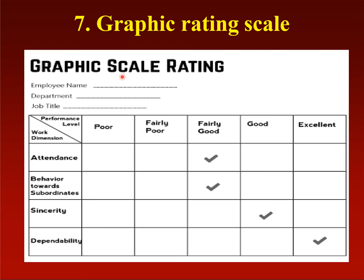The graphic rating scale has a minimum value and a maximum value — poor is the minimum and excellent is the maximum. Similar to a checklist, there are a number of statements about the job the employee is performing. However, unlike the checklist where it is only yes or no, here the statement is rated on a scale: poor, fairly poor, fairly good, good, or excellent. For example, in terms of attendance the employee is fairly good; behavior towards subordinates is fairly good; sincerity to the job is good; dependability is excellent.